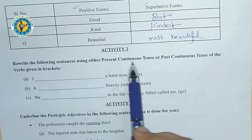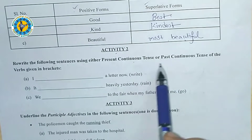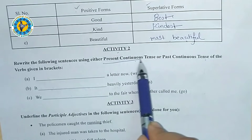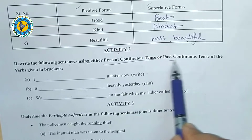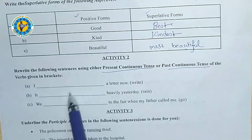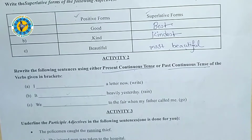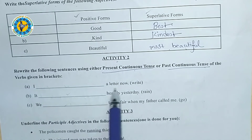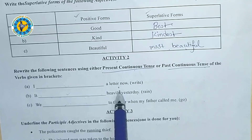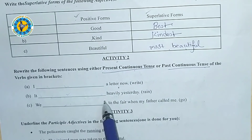Activity Two: Rewrite the following sentences using either present continuous or past continuous tense. Fill in the blank spaces with the correct present or past continuous tense. First, read each sentence carefully to understand which tense is being used.